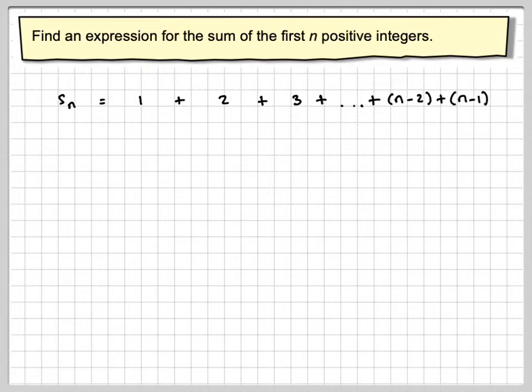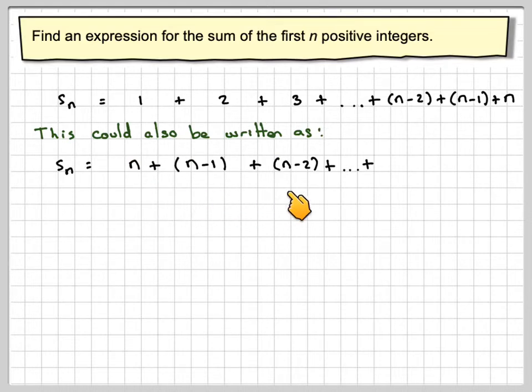up until the two numbers just before the last term, that would be n minus 2 plus n minus 1 plus the last term which is n. Realizing that this could also be written backwards, this is quite a useful technique, so we've got n, n minus 1,